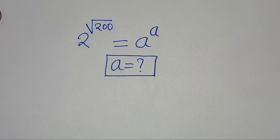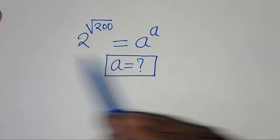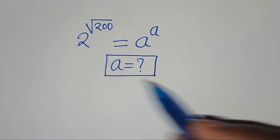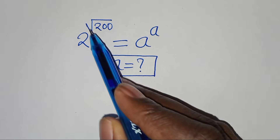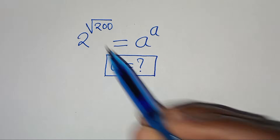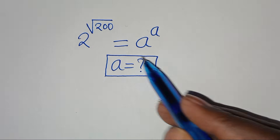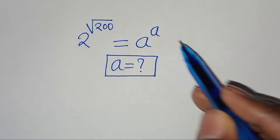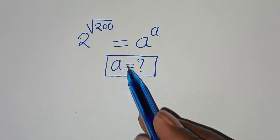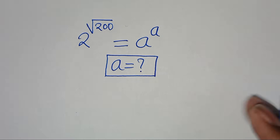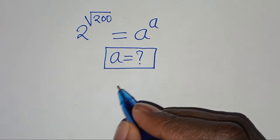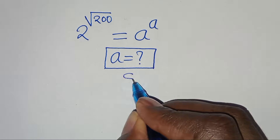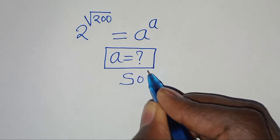Hello everyone, you are welcome to solve this nice algebra problem, which is 2 to the power of square root of 200. This is equal to a to the power of a. So what is the value of a? Let's provide a solution from here.